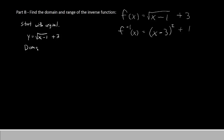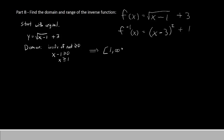Let's think about the domain. Recall that for the domain of a function that has a square root, the things inside the square root must be greater than or equal to 0. So we'll say x minus 1 is greater than or equal to 0, meaning x must be greater than or equal to 1. In interval notation, that's bracket 1 comma infinity.